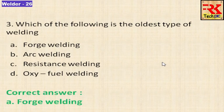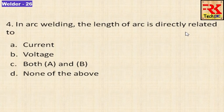Forge welding is the oldest welding procedure. In arc welding, the length of arc is directly related to voltage. Once you have the current and the voltage, the answer is both.